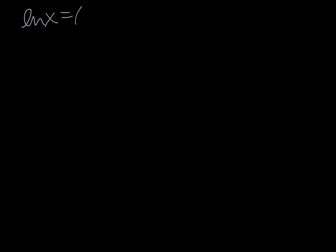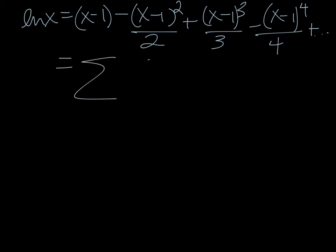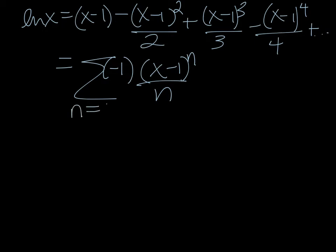So ln of x equals x minus 1, minus x minus 1 squared over 2, plus x minus 1 cubed over 3, minus x minus 1 to the fourth over 4, and so on. Let's write that using sigma notation. We have x minus 1 to the n over n, but with alternating signs, so we need a factor of negative 1 to some power. Starting our n's at 1 and beginning with a positive term, we use negative 1 to the n plus 1. The series is the sum of negative 1 to the n plus 1 times x minus 1 to the n over n.